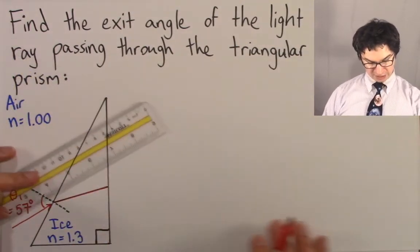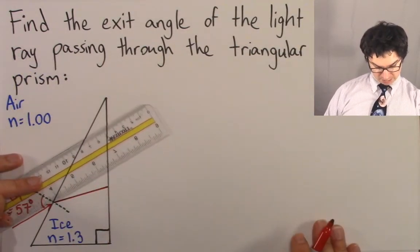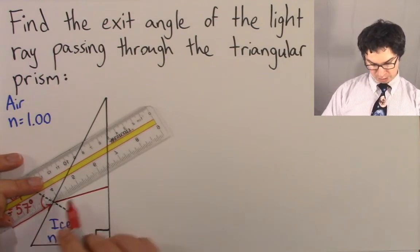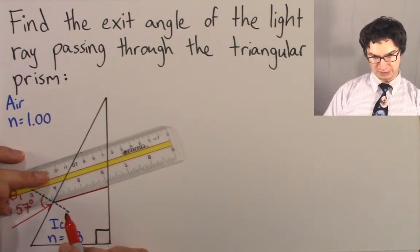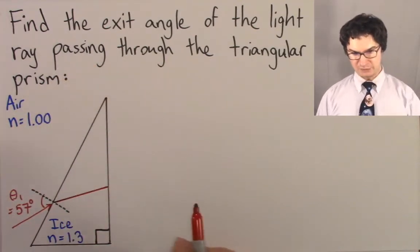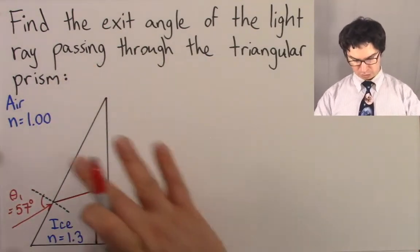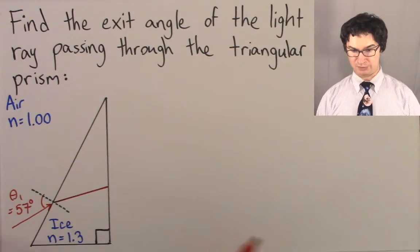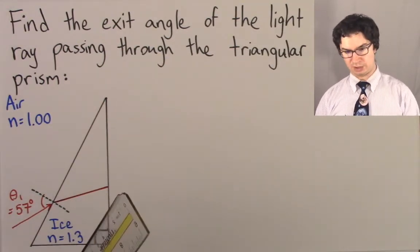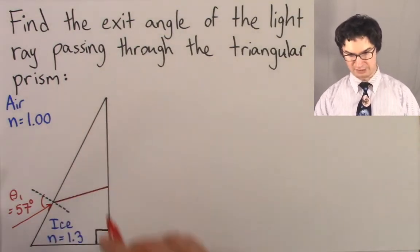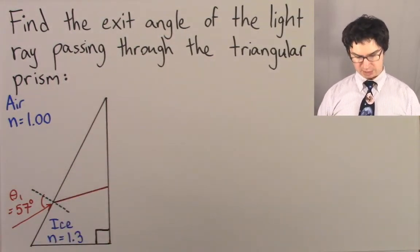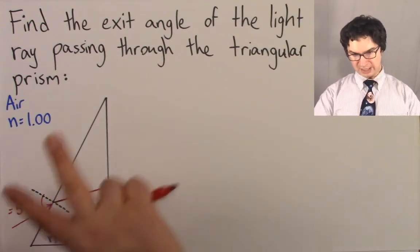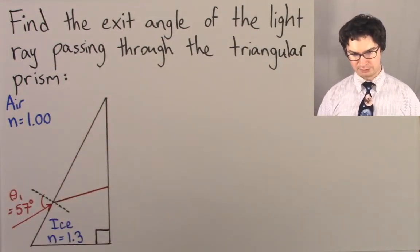So there's the light ray. Notice, if it had gone straight in, it would have gone along this direction, but we bent it toward the normal. If you need to take a moment and pause the video to get this diagram sketched out, I realize that this might take some time. I used a ruler to draw this diagram to make the lines nice and straight. So take a moment, make sure that you pause the video and get this drawn on your paper sufficiently.